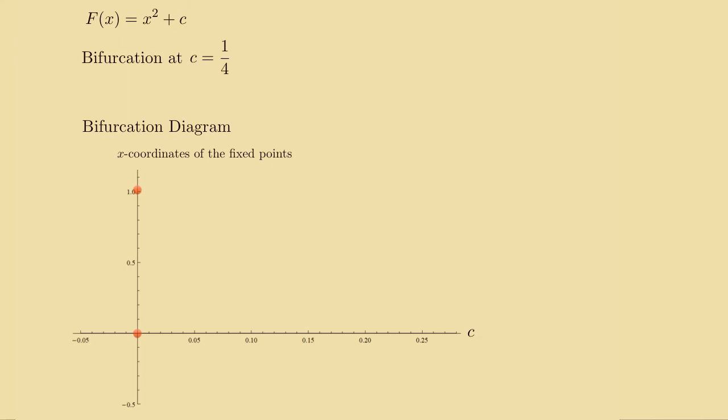And then as c made its way towards 0.25, each of those points got closer and closer to each other until they coalesced at a single point.